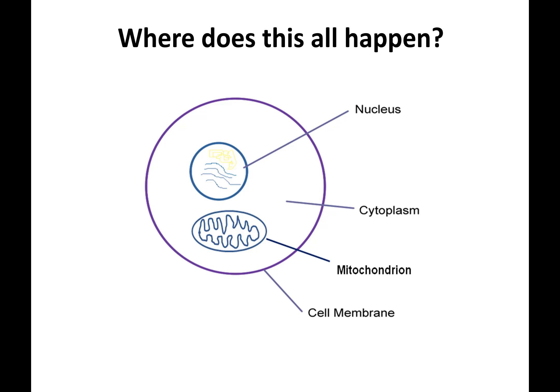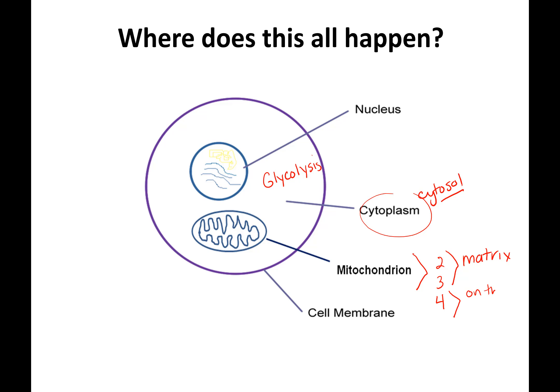Glycolysis happens in the cytoplasm or cytosol. Cytosol is important for eukaryotes — it's the cytoplasm minus all the organelles like mitochondria. The mitochondrion is where steps two, three, and four happen. Within the mitochondria, steps two and three happen in the matrix, and stage four happens on the inner membrane.